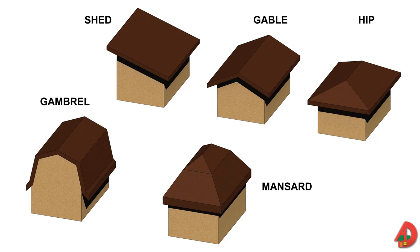A shed roof is the simplest type of roof to construct because they only have one slope. A gable roof has a ridge at the center and slopes in two directions. Hip roofs have four sloping sides and are the strongest type of roof because they are braced by four rafters, but they are also the most difficult to construct. Two other types of roofs are gambrel and mansard roofs, which have doubled slopes on each side and offer additional living space directly underneath.